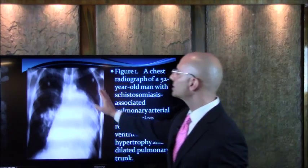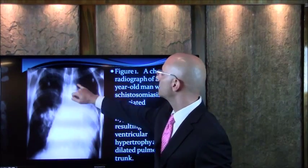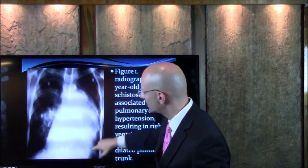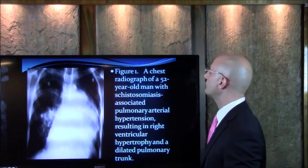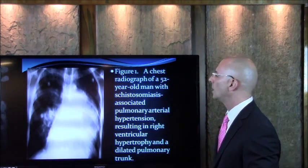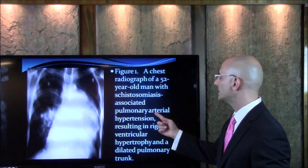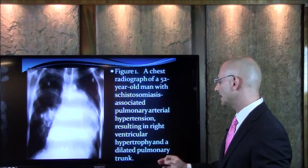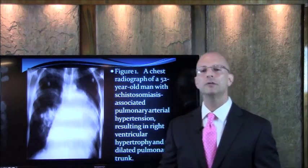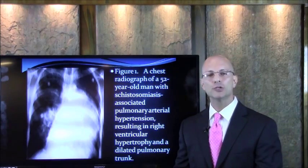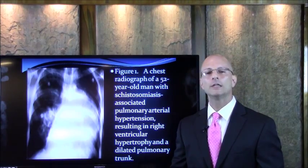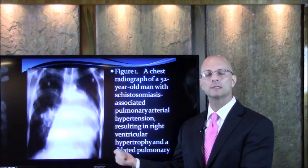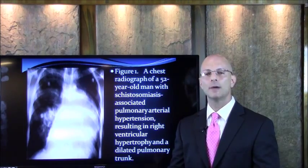Here is an x-ray study — you can see the lungs here on x-ray, the ribs, the lungs, and the heart tissue. Figure 1: a chest radiograph of a 52-year-old man with schistosomiasis-associated pulmonary arterial hypertension resulting in right ventricular hypertrophy and a dilated pulmonary trunk. Do you think there are blood pressure regulation problems? Do you think that blood pressure medicine will fix this infection that's causing the blood pressure problems? You've got to step out of the box.